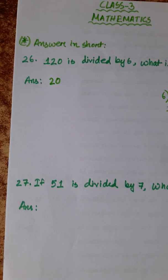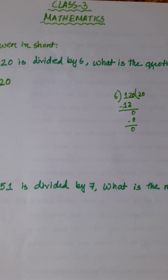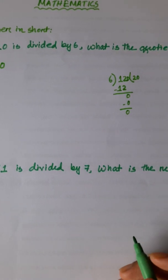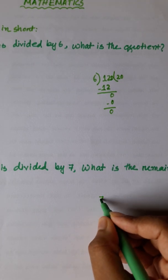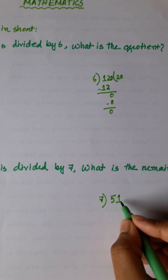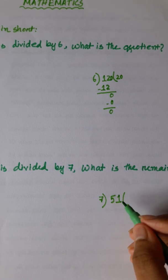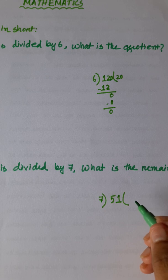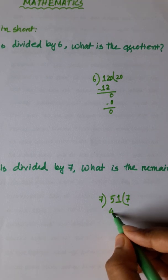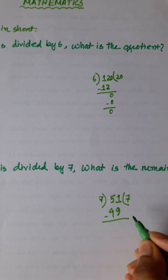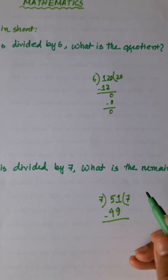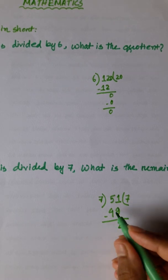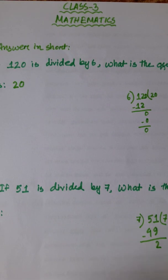Number 27: if 51 is divided by 7, what is the remainder? Let's divide 51 by 7. 7 eights are 56 — too high. 7 sevens are 49. 51 minus 49 gives us 2. The remainder is 2.